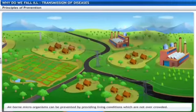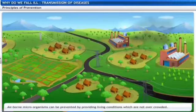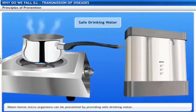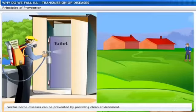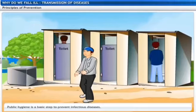There are various ways of preventing diseases. Airborne microbes can be prevented by providing living conditions that are not crowded. Safe drinking water is important - boiled water should be used, or nowadays we have RO facilities at home for good drinking water. Governments have established e-toilets and toilet facilities that help in preventing diseases. Public hygiene is a basic step that prevents the spread of infectious diseases.